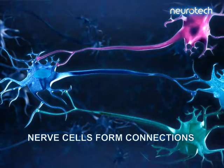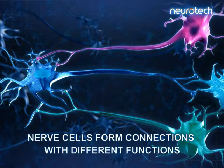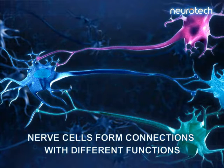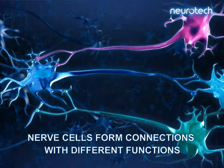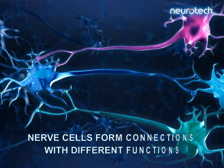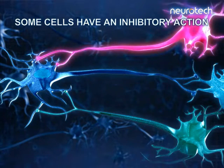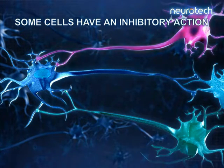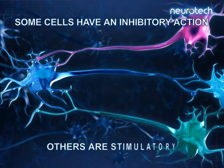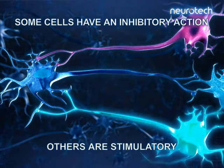Nerve cells form connections with different functions. Some cells have an inhibitory action. Others are stimulatory.